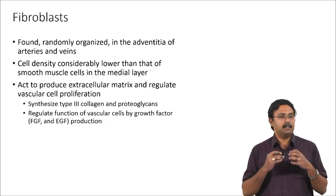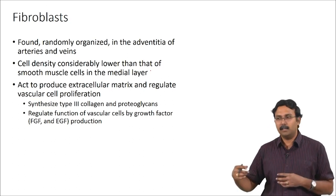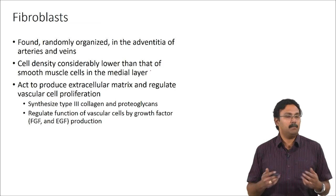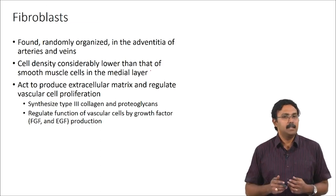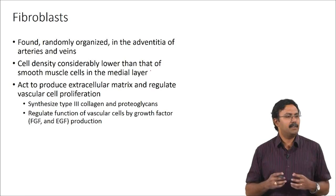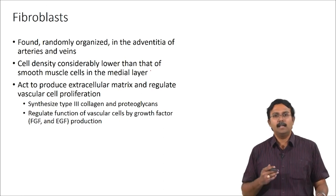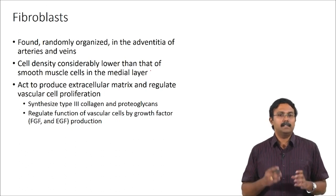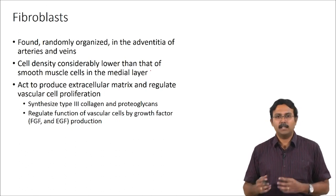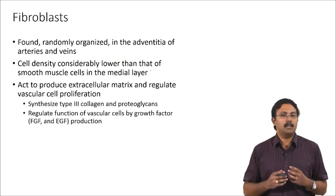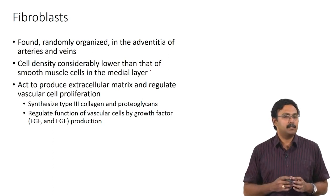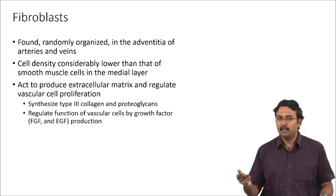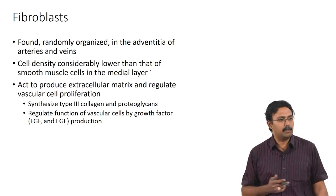Fibroblasts are found in the tunica adventitia as randomly organized cells with significantly lower cell density. They produce ECM and regulate vascular cell proliferation. They can synthesize type III collagen and other proteoglycans, and regulate vascular cell function through growth factor production — including fibroblast growth factors and epidermal growth factors.